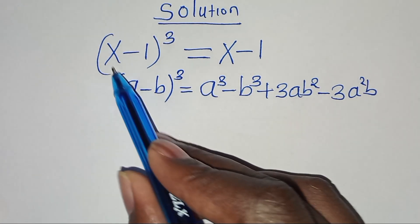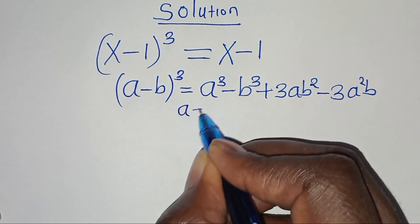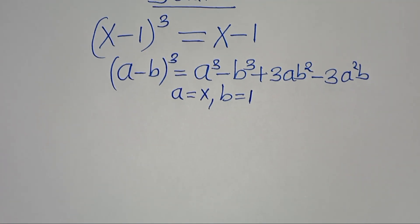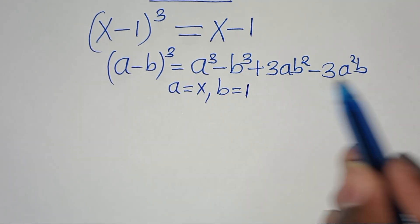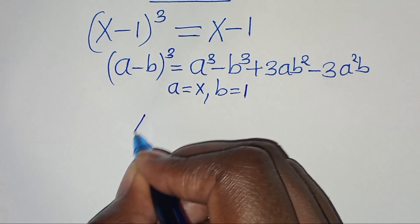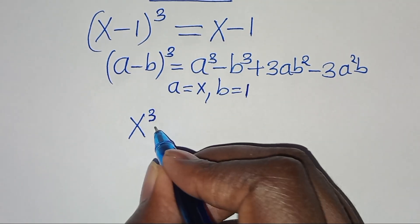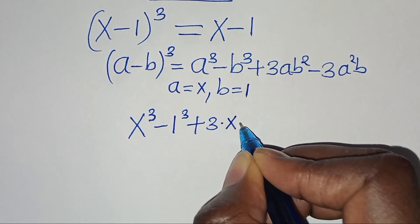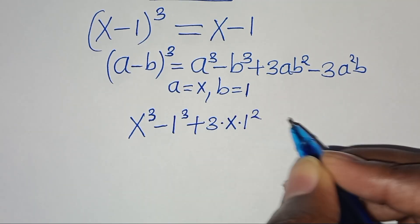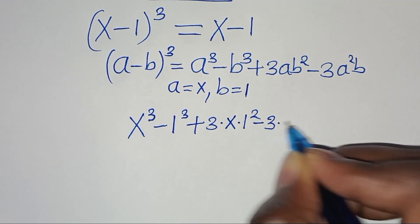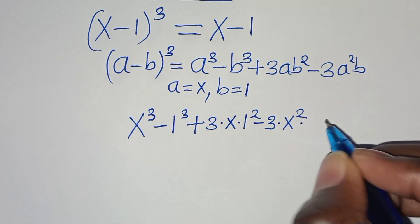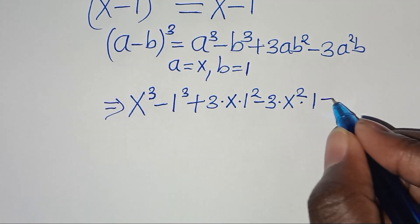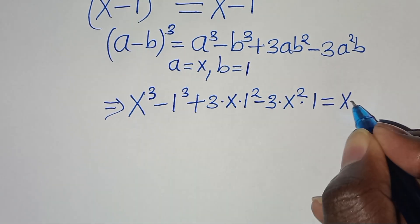Now, we have that in this equation, a is equal to x, and b is equal to 1. So let's substitute in this formula, so that now we have x to the power of 3, subtract 1 to the power of 3, then plus 3 times x multiplied by 1 squared, then subtract 3 multiplied by x to the power of 2, then multiplied by b which is 1. So in this case, this is equal to x subtract 1.